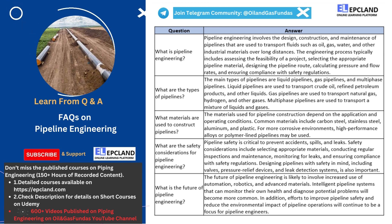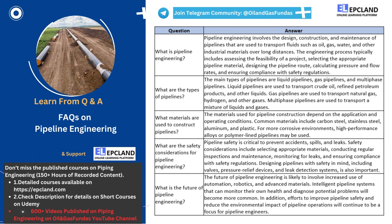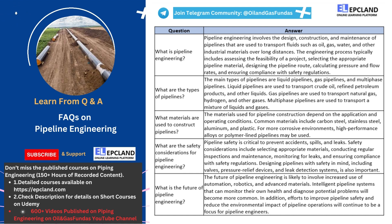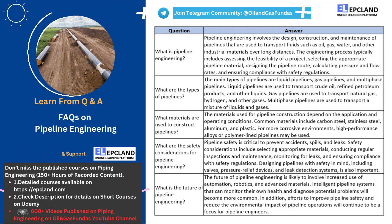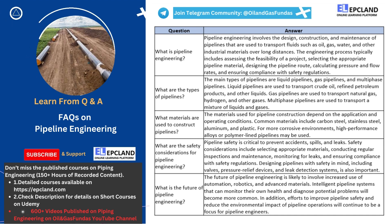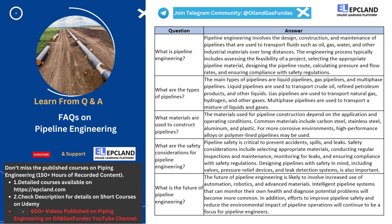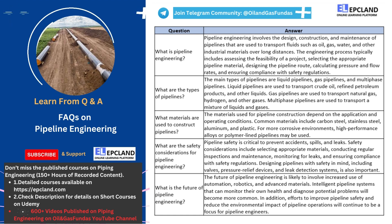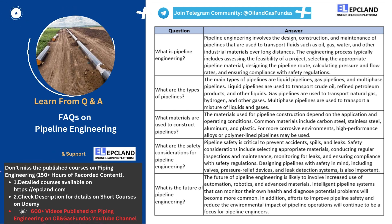Regular inspections and maintenance of pipelines are critical to ensure that any potential issues are identified and addressed promptly. Monitoring for leaks is also essential, as detecting leaks early can prevent further damage and mitigate potential risks. Pipeline engineers must also incorporate safety features such as valves, pressure relief devices, and leak detection systems into the pipeline design. These features can help prevent accidents and minimize the impact of any incidents that do occur.